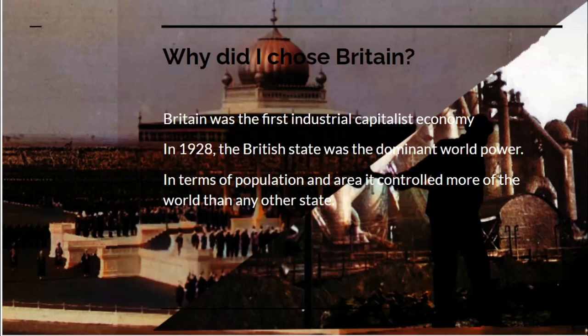Now, why did I choose Britain? Well, Britain was the first industrial capitalist economy, and in 1928 Britain, or the British state, was the dominant world power. It's not easy to grasp that now, but that was the case a hundred years ago. In terms of population and area controlled by the state, it was bigger than any other state.